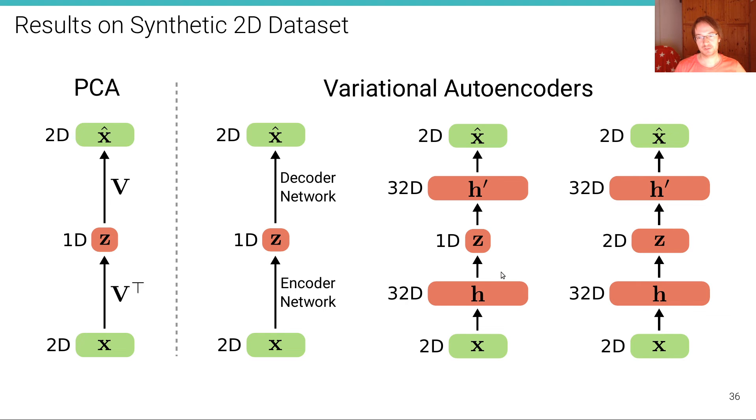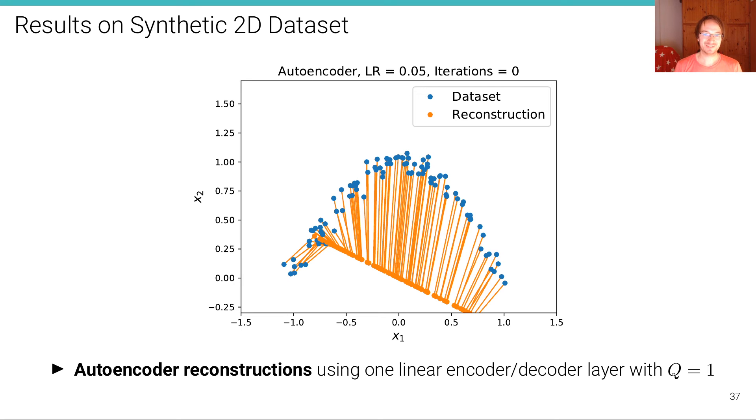We have a version where we also go to a one dimensional space, but in a nonlinear way where we go from the two dimensional space first to a 32 dimensional space. And then we map to the one dimensional space. And then we have another hidden layer that is again a hidden layer in this MLP decoder where we go from this one dimensional latent space to the 32 dimensional decoder hidden space. And then we map to the reconstruction. And then we have the same model where now the latent dimension is changed from 1D to 2D and we observe what will happen.